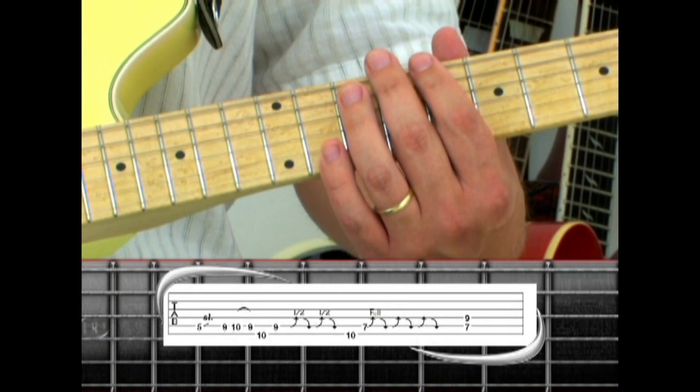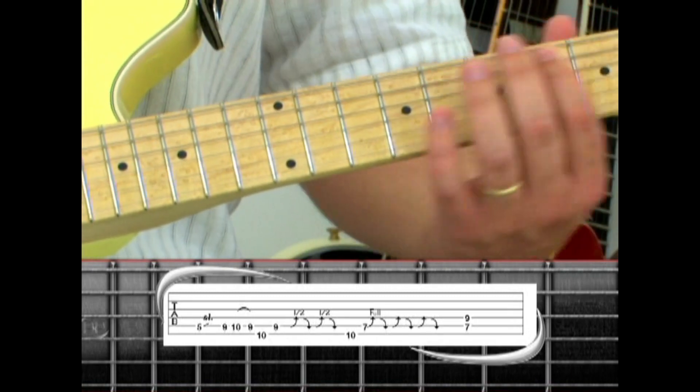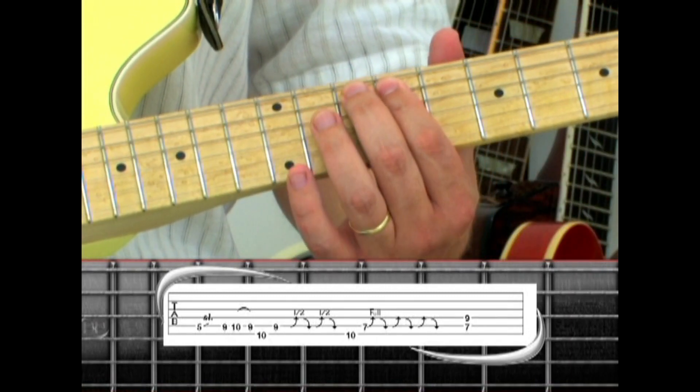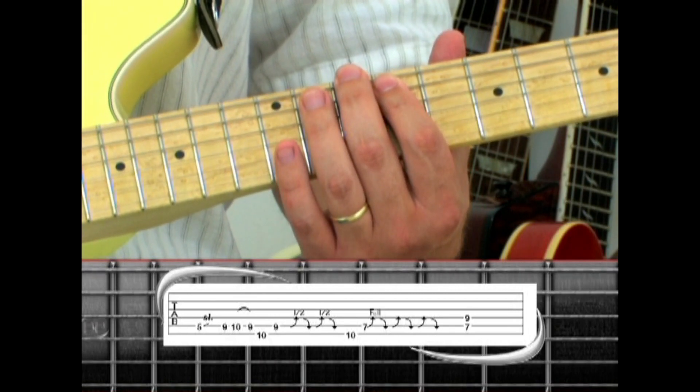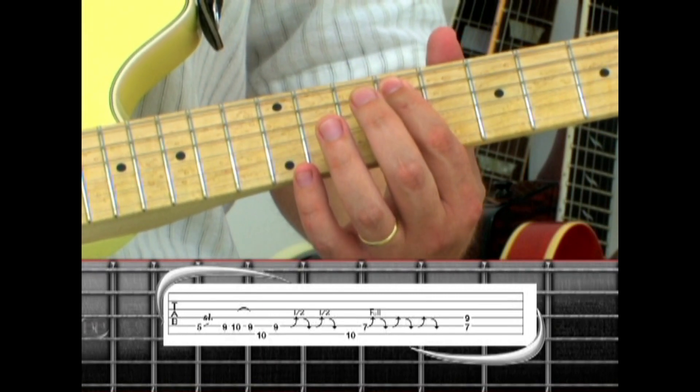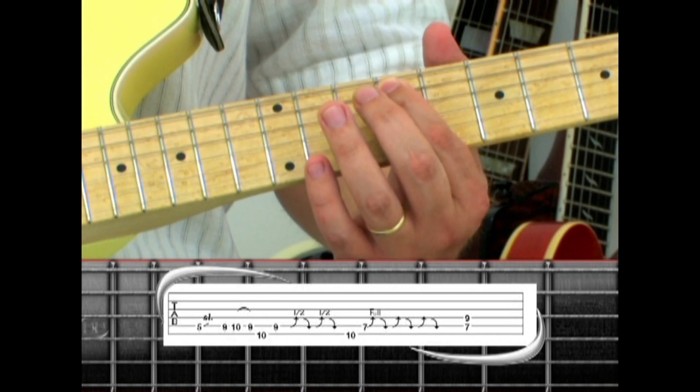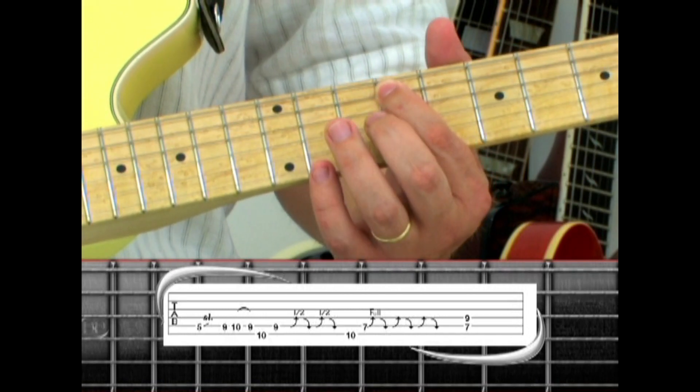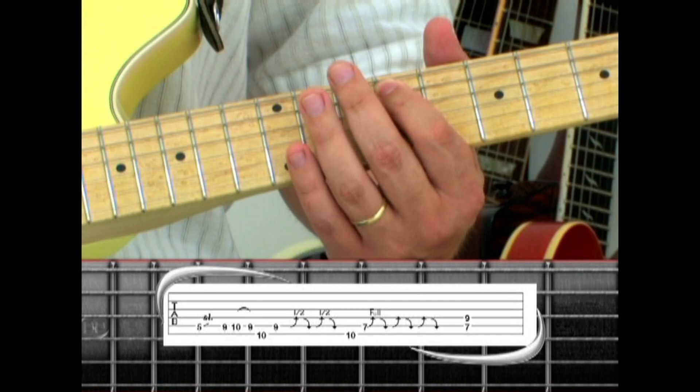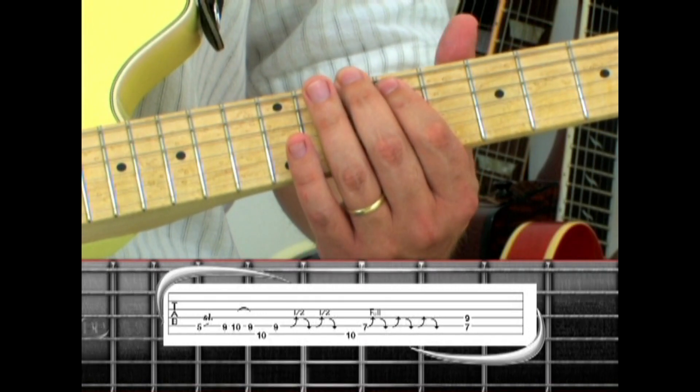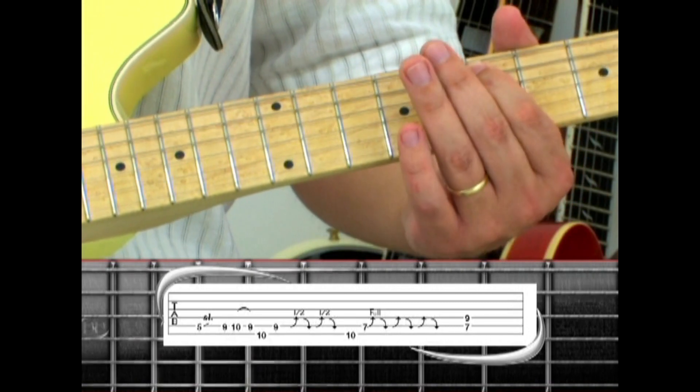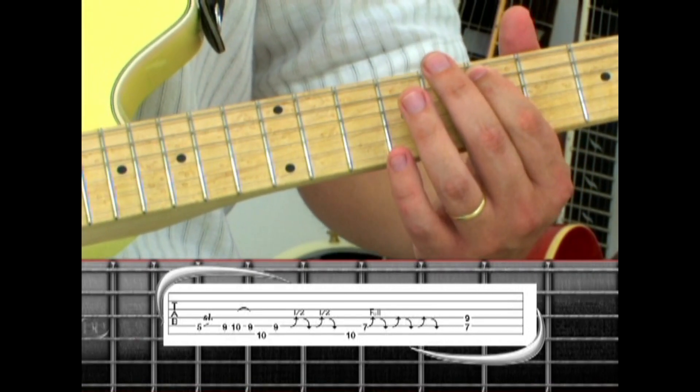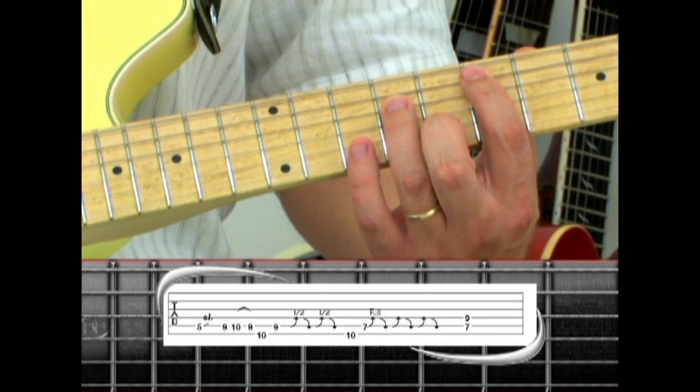Pick 5th string 5 and slide up to 9, pick 10, pull to 9, then 6th string 10, back to 9. Half step bend, release, bend, release, 6th string 10, then 5th string 7, bend and release 3 times, and play an E5 on the 5th string 7 with 4th string 9.